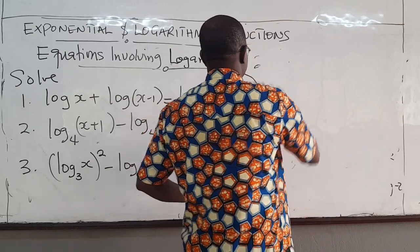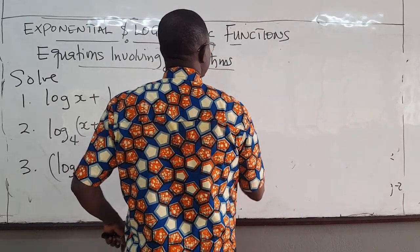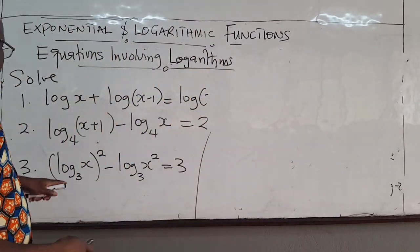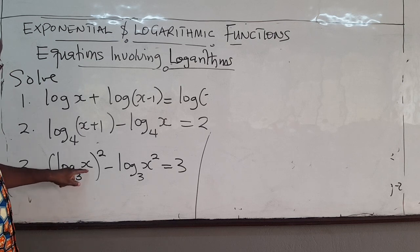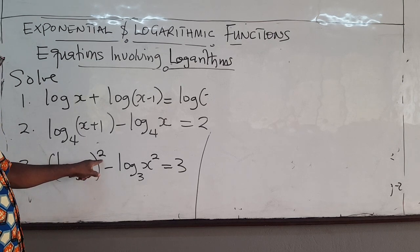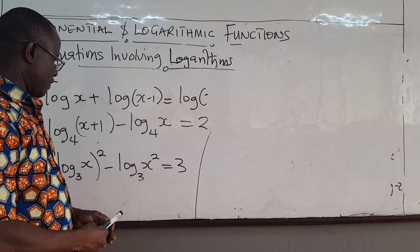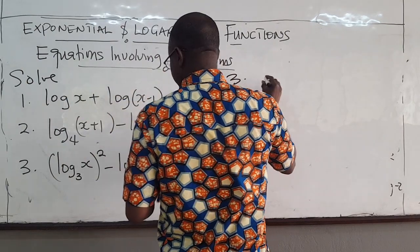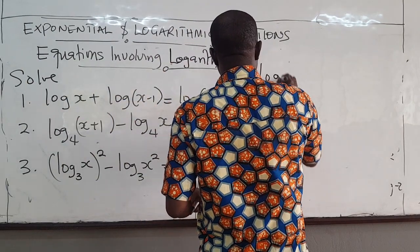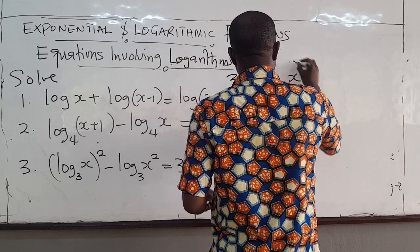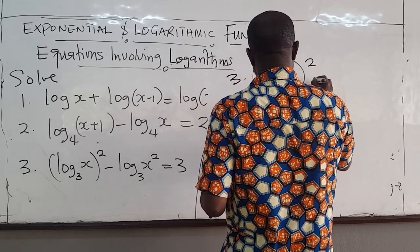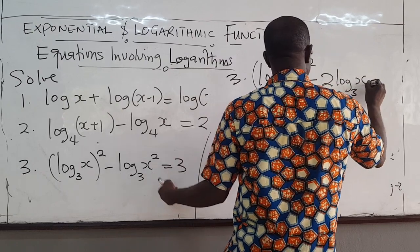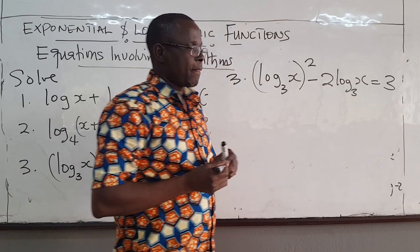We have log base 3 of x, all of this raised to the power 2, minus log base 3 of x squared. Log base 3 of x squared all raised to the power 2, minus 2 log base 3 of x, and that equals 3.